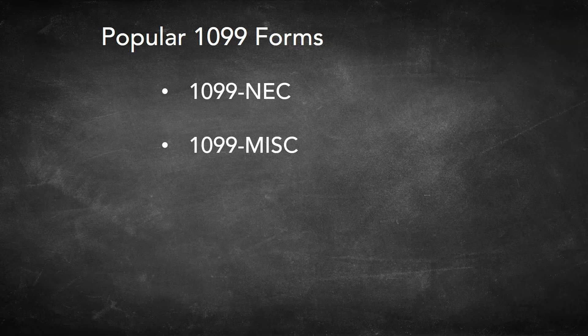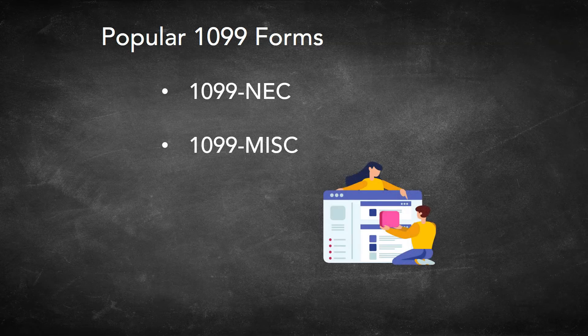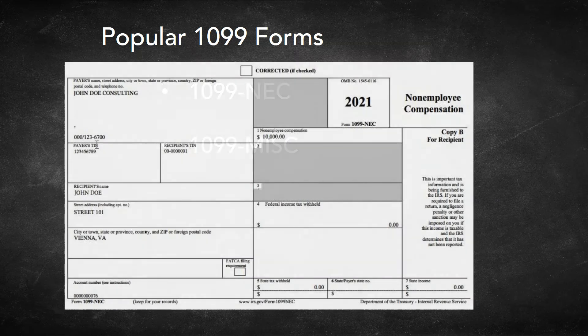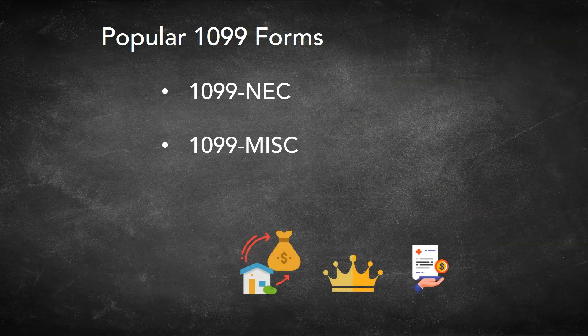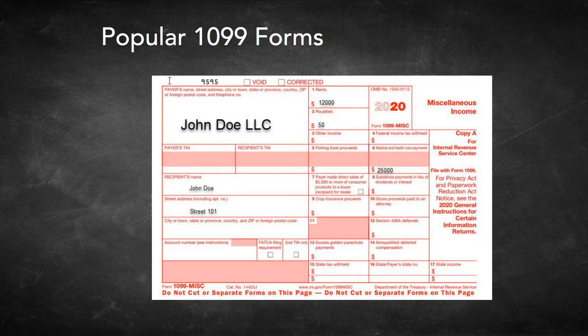You might be curious why two forms — that is determined by IRS and how they want to track different kinds of earnings. Which form to select depends on what kind of service a company received. For example, if your company hired an external consultant to redesign its website, the payment made should be reported in 1099 NEC, which is non-employee compensation. In case of payments related to rents, royalties, and healthcare, they should be reported in 1099 MISC form.